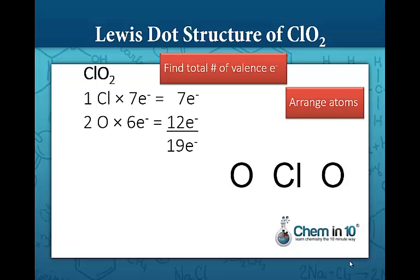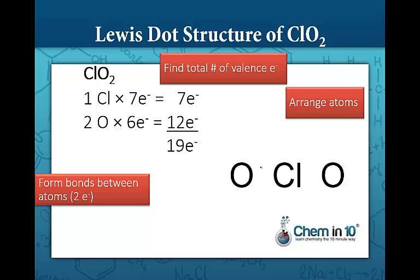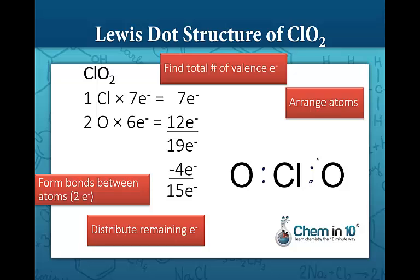We'll arrange the atoms so that the singular atom is in the middle. To form the bonds, each bond takes two electrons, so we have used four electrons. So we have fifteen electrons remaining. We want to distribute the remaining electrons so that everyone has a full outer shell. It's going to be a little challenging with an odd number of electrons. Let's start with the oxygens.